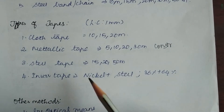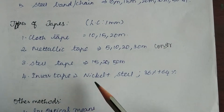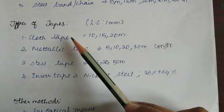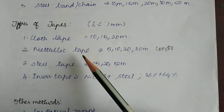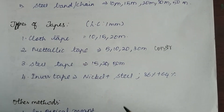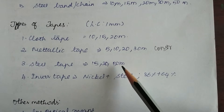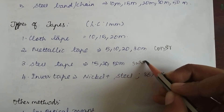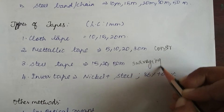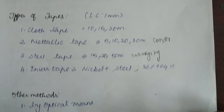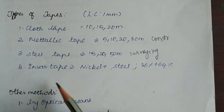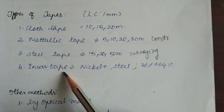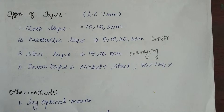Next is steel tape. Steel tapes are very good in quality and accuracy compared to cloth and metallic tapes. They are available in many sizes and are mostly used for surveying.